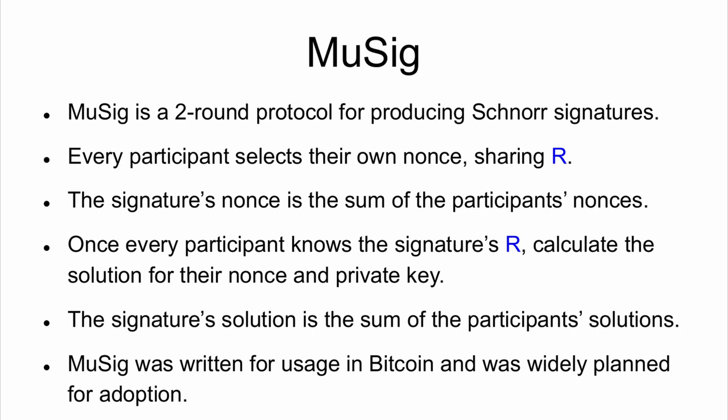Here's where we get back to multi-sig. It's a two-round protocol for using Schnorr signatures — I send people a message, they send a message back, that's one round; I do my thing, send another message, they send a message back, that's the second round, and I'll have a signature if all went well. Everyone selects their own nonce and shares the public key of it. The signature's nonce is just the sum of everyone's nonces. Once every participant knows the nonce being used, they calculate the solution for their specific nonce and their specific part of the private key. Then you just add up all the solutions — it's literally just adding things up.